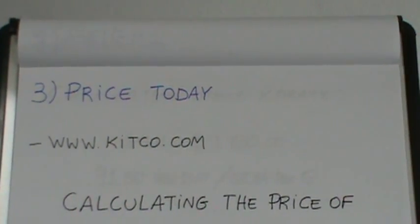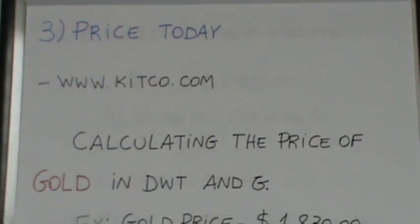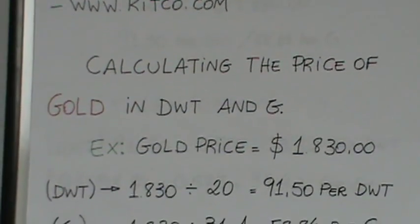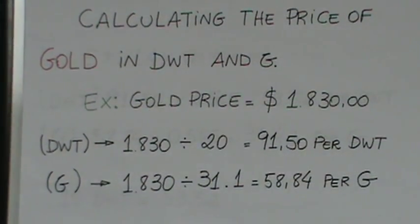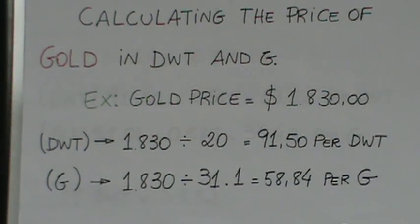Let's get started here with calculating the price of gold in pennyweights and grams. We know that today's gold price we're going to be using is $1,830. There's 20 pennyweights in every troy ounce, so it's a simple division there. And we come up with $91.50 per pennyweight when gold is trading at $1,830 an ounce.